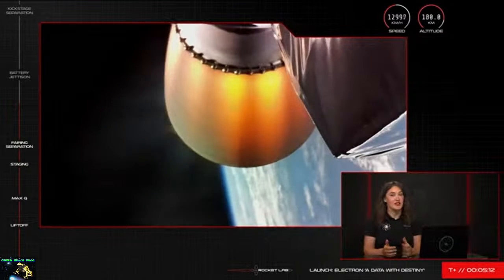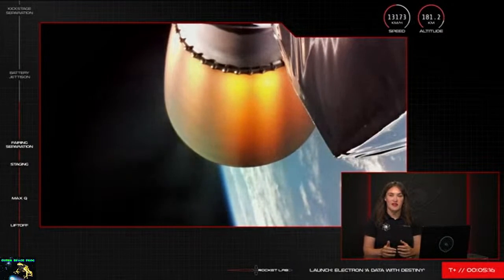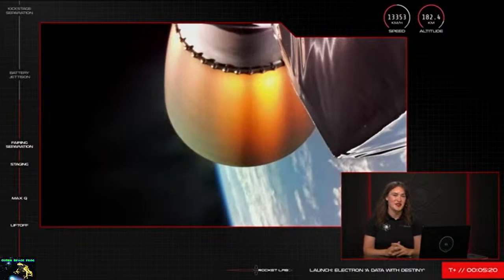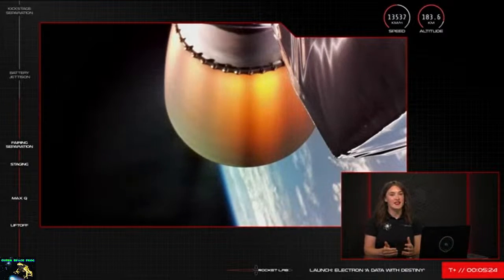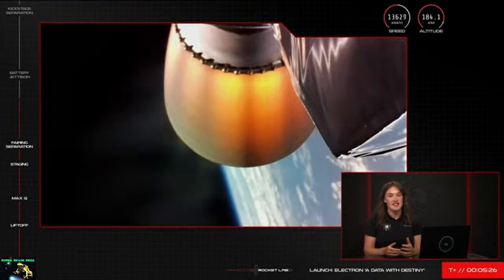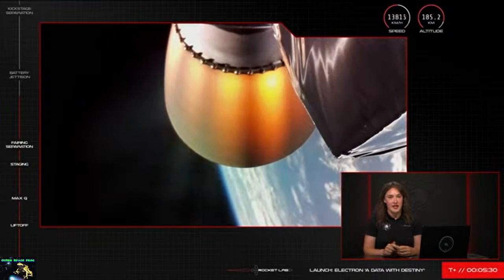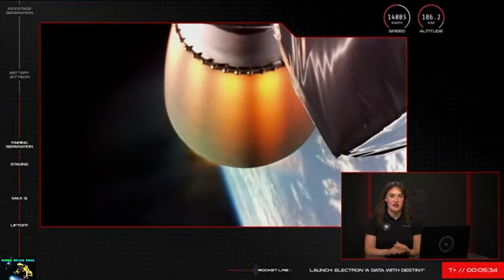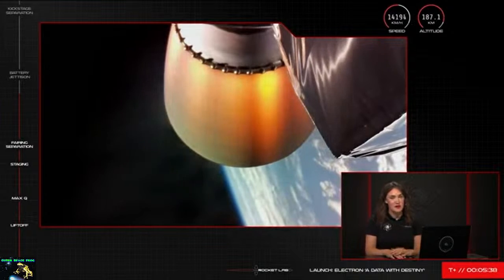We're coming up to a milestone unique to Electron soon, the swap out of the batteries that our Rutherford engines draw their energy from to continue. As our engineers say, chooching, the vehicle has run through the set of batteries we started with at liftoff and so now the second stage of the vehicle needs to swap over to a fresh one to keep things going. We call this move the battery hot swap. You should hear that call come from mission control shortly, but keep an eye on your screen too as often you can catch a glimpse of them falling away.